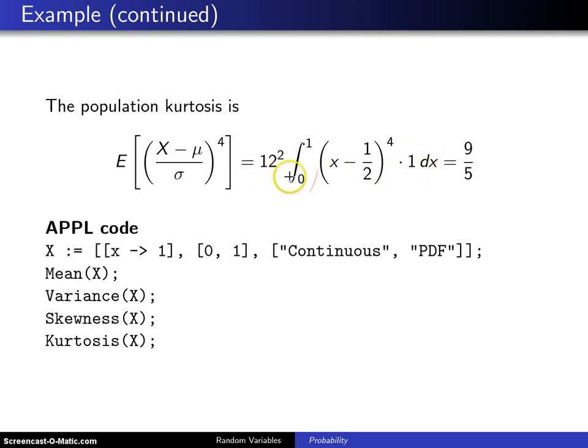Again, I have saved you from the details here. This turns out to be 9/5. So 9/5 is the kurtosis.